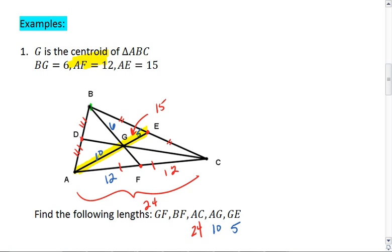Lastly, we're going to look at median BF. Since BG is 6, and that's from the vertex to the centroid, then GF must be half that length, which is 3. So the entire median BF is 6 plus 3, and that's 9.